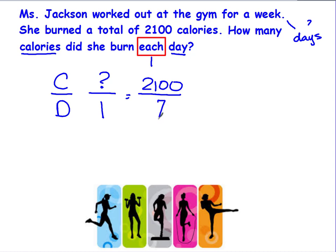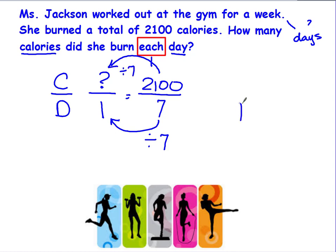Now I'm going to go from what I know to what I don't. I know the ratio on this side, so I'm going from here to here. The number got smaller so I'm going to divide. Seven divided by seven is one. If I do it to the bottom, I do it to the top. So now I'm going to solve this problem by going 2,100 divided by seven.